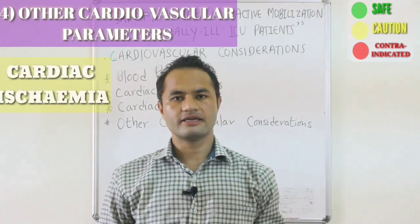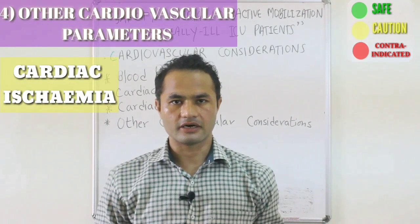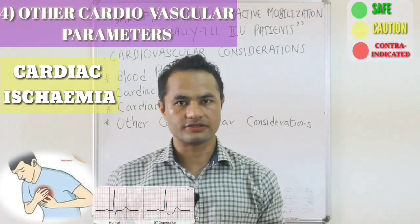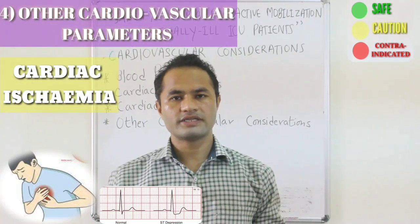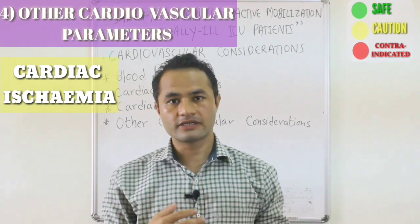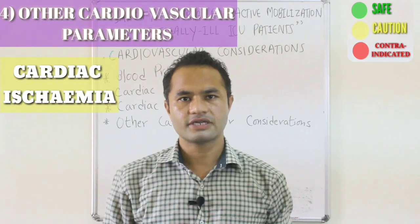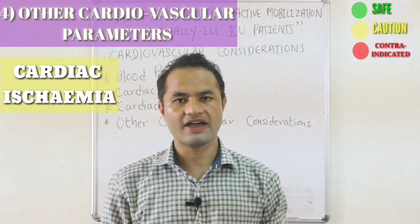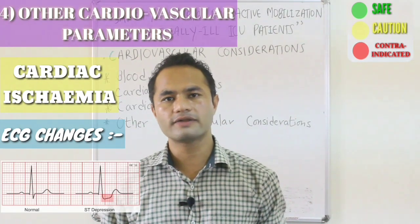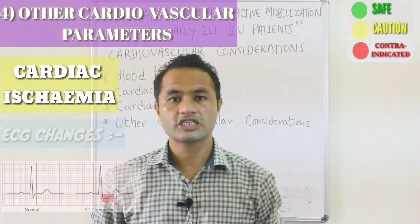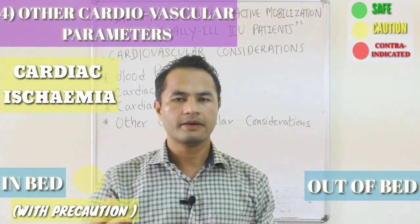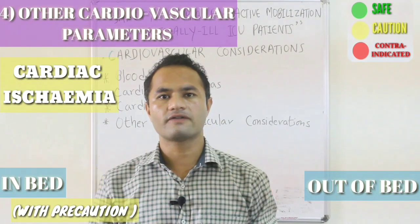The last cardiovascular parameter is cardiac ischemia, evident by ongoing chest pain — central and squeezing in nature, worsening with physical activity — or ECG changes such as ST segment depression of more than 2 mm. Patients with cardiac ischemia can be mobilized safely within the bed but should not be mobilized out of the bed at all.